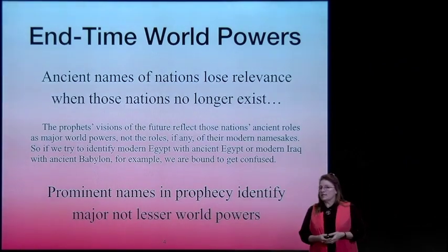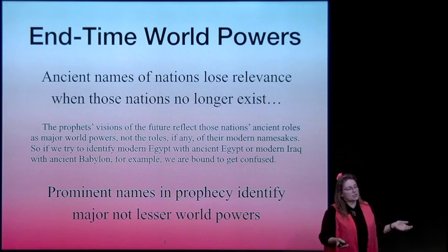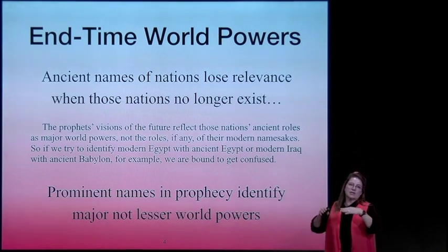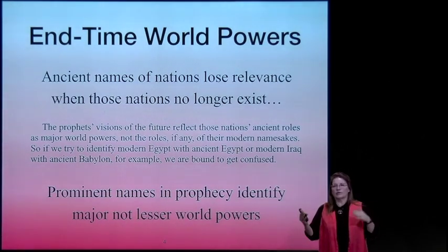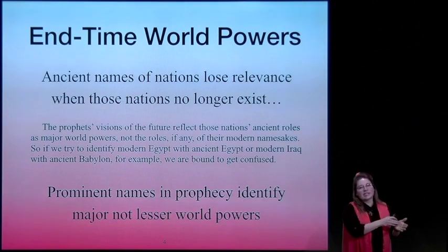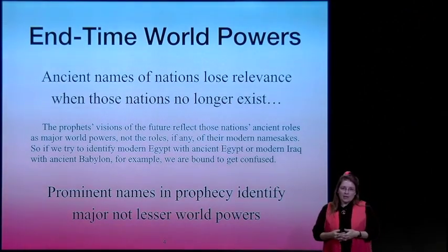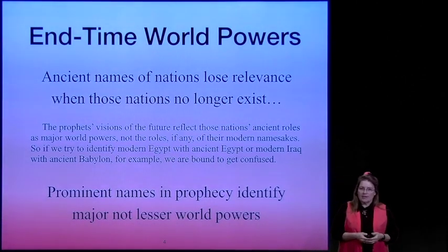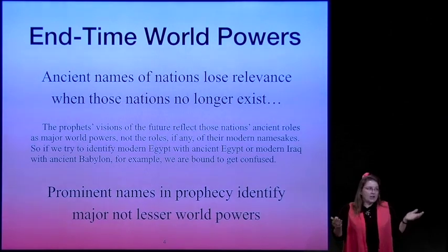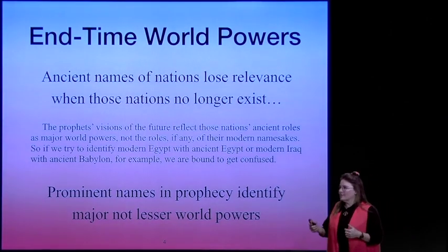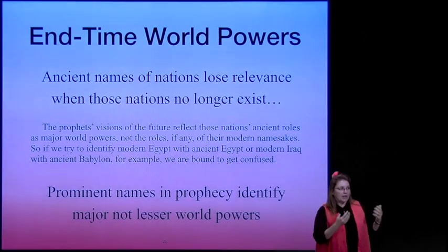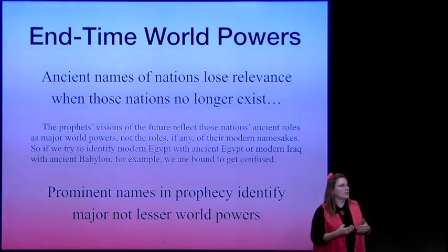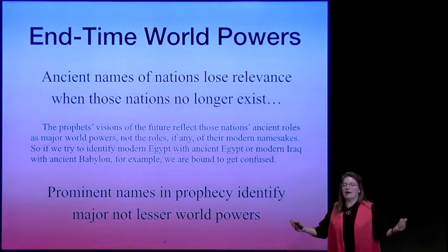Ancient names of nations lose their relevance when those nations no longer exist. So when we try to take ancient names and place them today on a map and try to relate what was said about the place anciently to today, we can get confused. The prophets' visions of the future reflect the nations' ancient roles as major world powers, not the roles, if any, of their modern namesakes. Prominent names in prophecy identify the major, not the lesser, world powers.